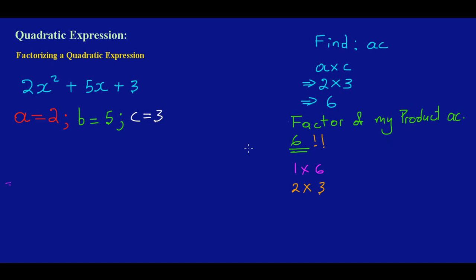Now I need to choose the set of factors that when I multiply them I get 6 (the product), and when I add them I get b which is 5. For the first set: 1 times 6 is 6, but 1 plus 6 is 7 — not 5, so I eliminate that. For the second set: 2 times 3 is 6, and 2 plus 3 equals 5, which is my b. So I'll use 2 and 3.